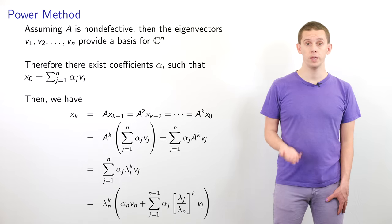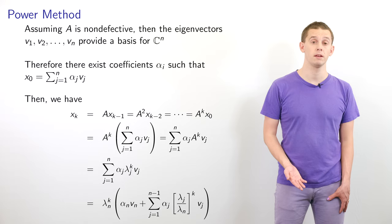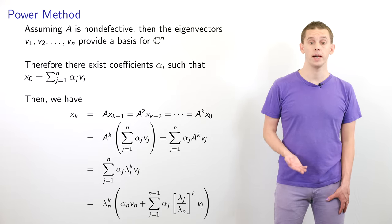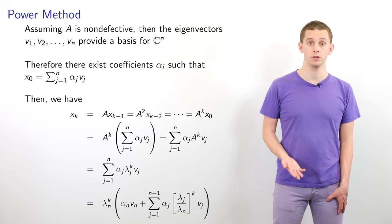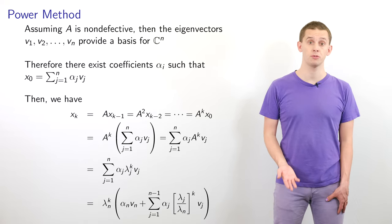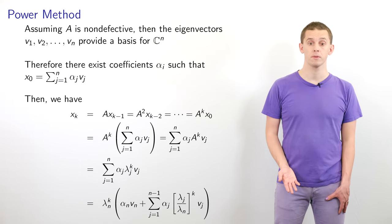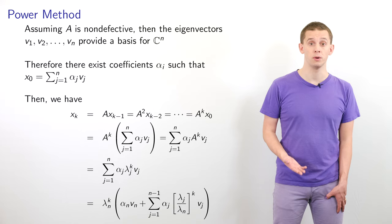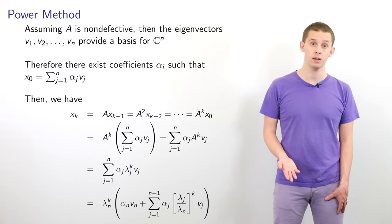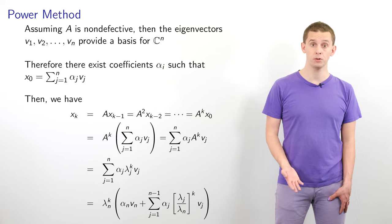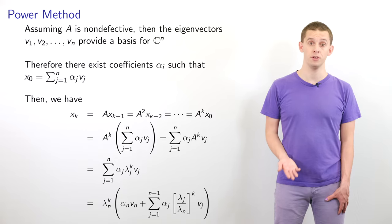If we now look at our expression for x_k, we see that it will be equal to A^k x0. Using our expansion for x0, this will be A^k times the sum from j=1 to n of alpha_j v_j. By linearity, this equals the sum from j=1 to n of alpha_j A^k v_j, which equals the sum from j=1 to n of alpha_j lambda_j^k v_j.